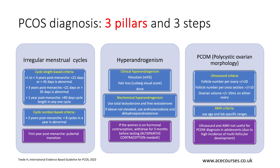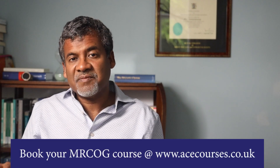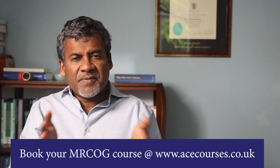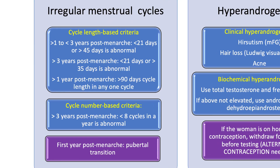The first pillar is irregular menstrual cycles. There are two criteria for defining this: one based on menstrual cycle length and the other on the number of cycles per year. How you apply these criteria also depends on when the patient had her menarche. In the first year after starting periods, cycles are expected to be infrequent and erratic — that could be completely normal. So we only start assessing regularity after one year from menarche.